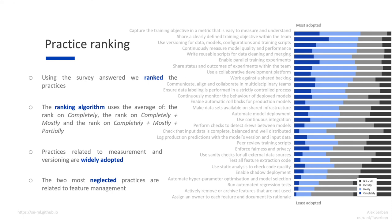In the picture on the right, we see all the practices ranked, starting with the most adopted on top and the least adopted at the bottom. We observe that practices related to measurement — such as capturing the training objective in a metric that is easy to measure and understand, or using versioning — are widely adopted. At the other end of the spectrum, practices related to feature management are often neglected. The ranking can be used as a proxy to assess how difficult a practice is to adopt. The full description of the ranking algorithm is available both in the paper and in the online catalog of practices.